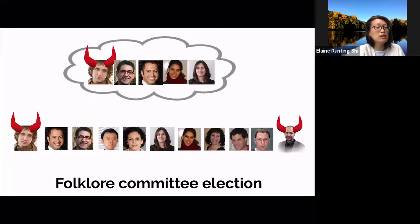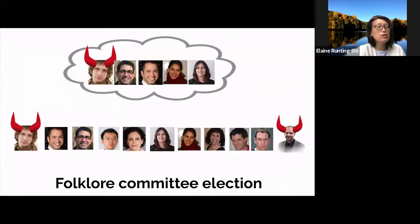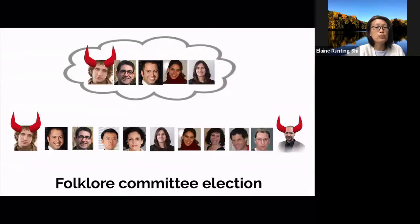Due to Chernoff bounds, the fraction of honest players in the committee should be roughly equal to the fraction of honest players in the overall population, with all but negligible probability.